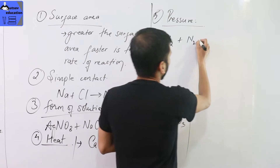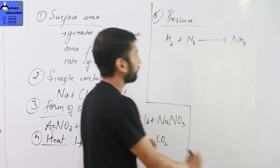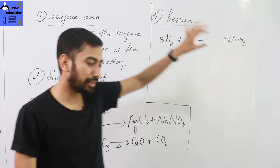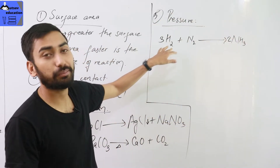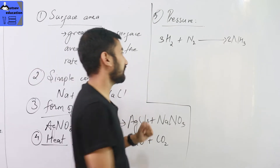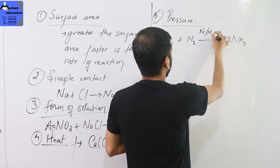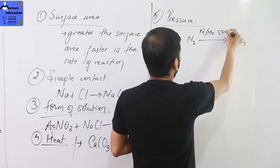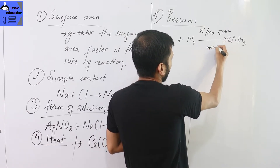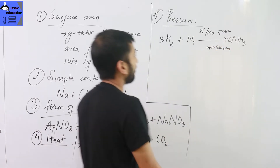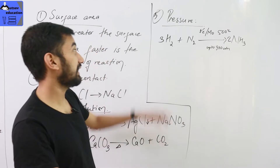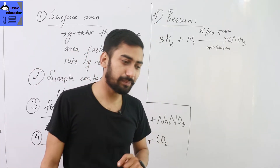Hydrogen plus nitrogen gives ammonia — this is the Haber process. In this reaction, an iron catalyst and molybdenum promoter are used, temperature is 500 degrees Celsius, and the atmospheric pressure applied is up to 980 atmospheres. So intense pressure is used in this reaction.